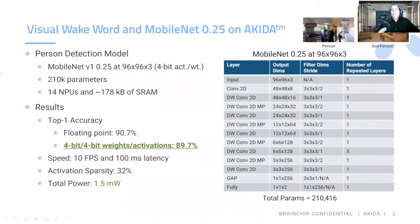The first demonstration you're going to see is on visual wake word — a person detection model with MobileNet V1.25, 210,000 parameters, 14 NPUs, and using 178 kilobytes of SRAM. Our results on a floating point accuracy of 32-bit was 90.7, and we quantized down to 4-bit weights and activation and got an accuracy of 89.7 with 10 frames per second and 100 milliseconds of latency. The total power is only 1.5 milliwatts.